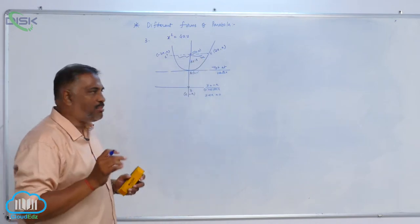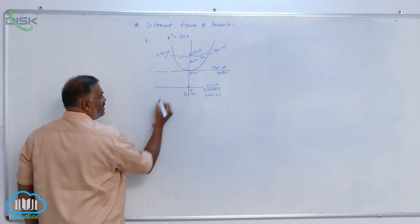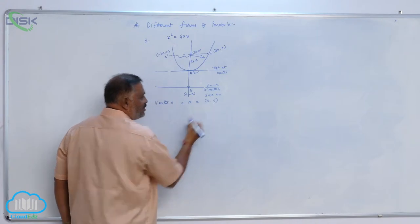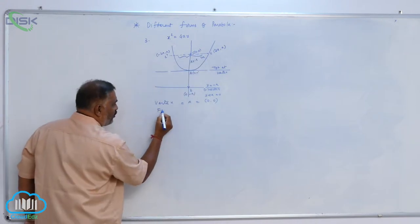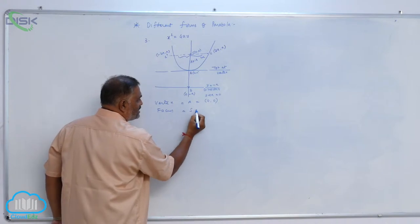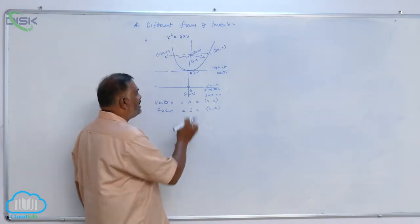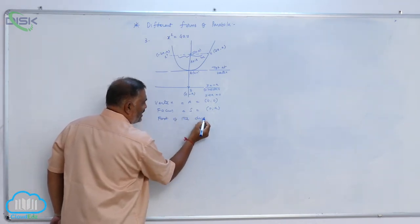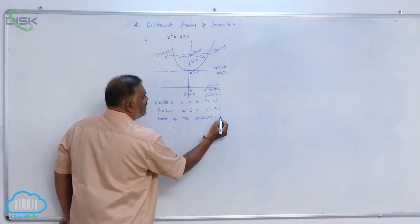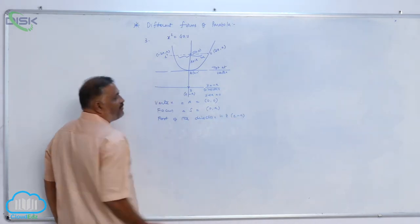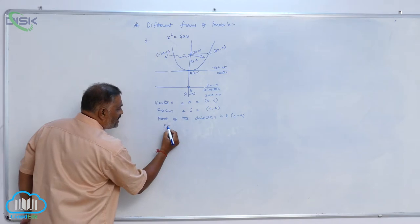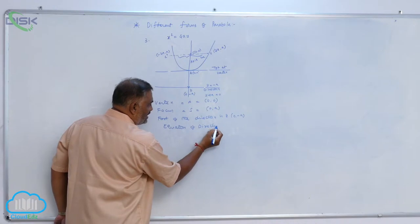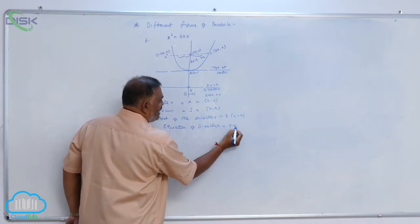We will list out all the properties one by one. First, the vertex of the parabola A = (0, 0). Then the focus S = (0, a). Then the foot of the directrix Z = (0, −a). Then the equation of directrix is y + a = 0.